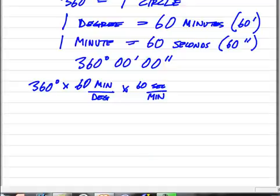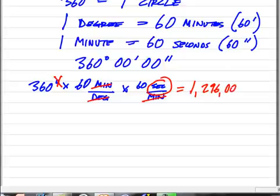You'll see that degrees cancel out and minutes cancel out, leaving us seconds. So our answer will be 1.296 million seconds in one circle.